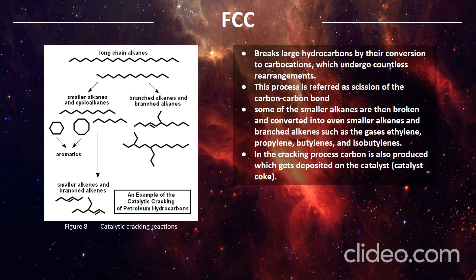Figure 8 shows the catalytic cracking reactions. FCC, or fluid catalytic cracking, breaks large hydrocarbons by converting them to carbocations, which undergo countless rearrangements. This process involves the scission of carbon-carbon bonds. Some of the smaller alkanes are then broken and converted into even smaller alkenes and branched alkenes, such as ethylene, propylene, butylenes, and isobutylene. In the cracking process, carbon is also produced, which gets deposited on the catalyst as catalyst coke.